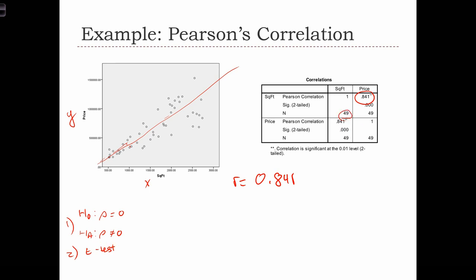Here n is 49, so we're going to have 47 degrees of freedom. Of course, a t with 47 degrees of freedom is essentially the same as using a standard normal test, a z-test. For step 3, let's say 5% significance level.